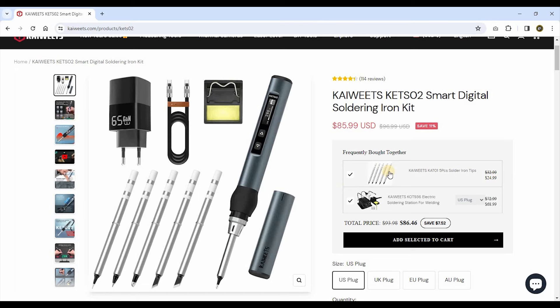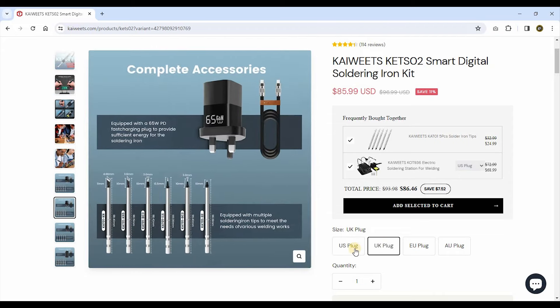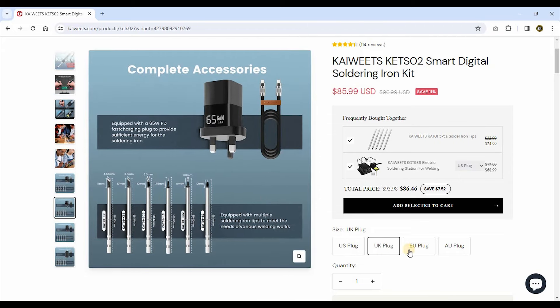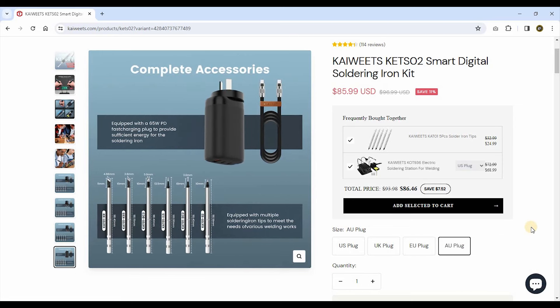Over here you have a couple of extra things that you can order with your Kiwitz soldering iron. In my case, it arrived with this extra set of soldering iron tips, and of course you have to check which plug you're ordering it with. You can choose between US plug, UK plug, European plug, or Australian plug.